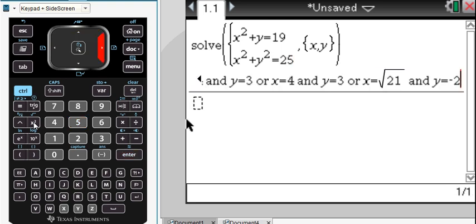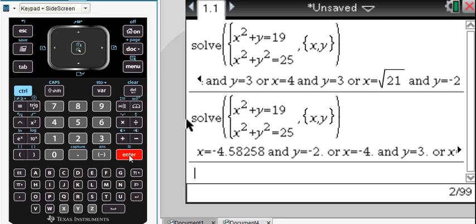The solution to that is right there. You can scroll to the end and take a look at that. If you wanted a decimal approximation, simply press control and enter. Notice how it has an approximate equals right there.